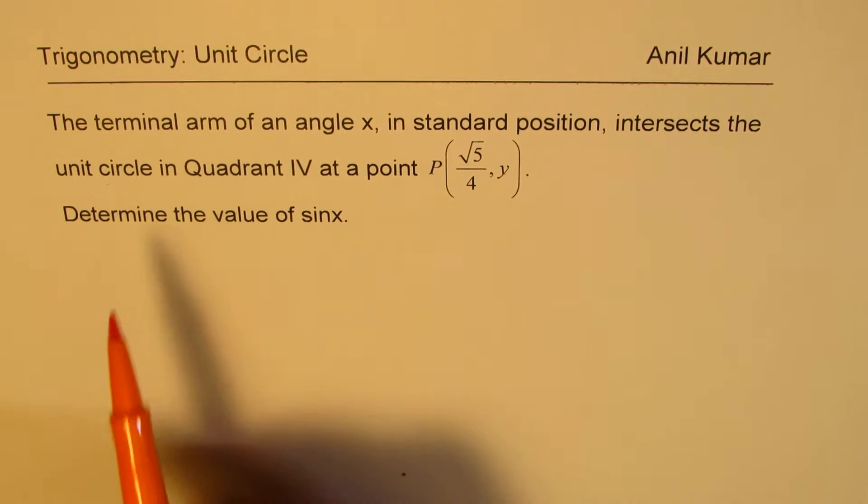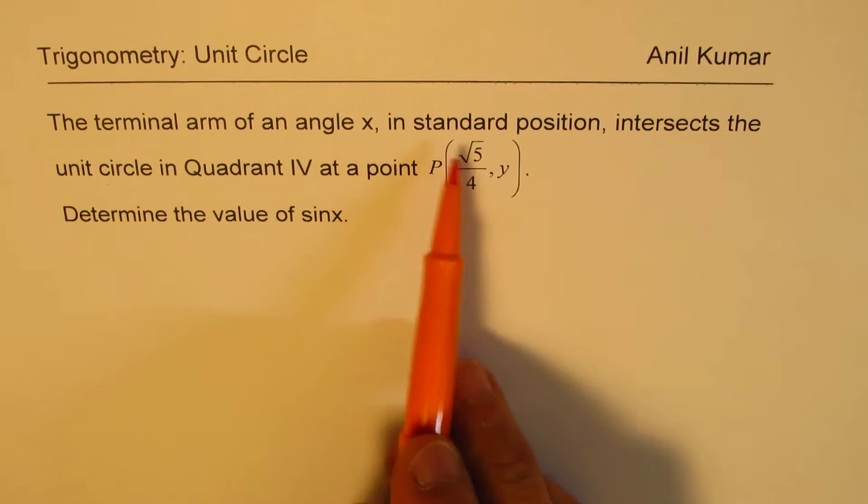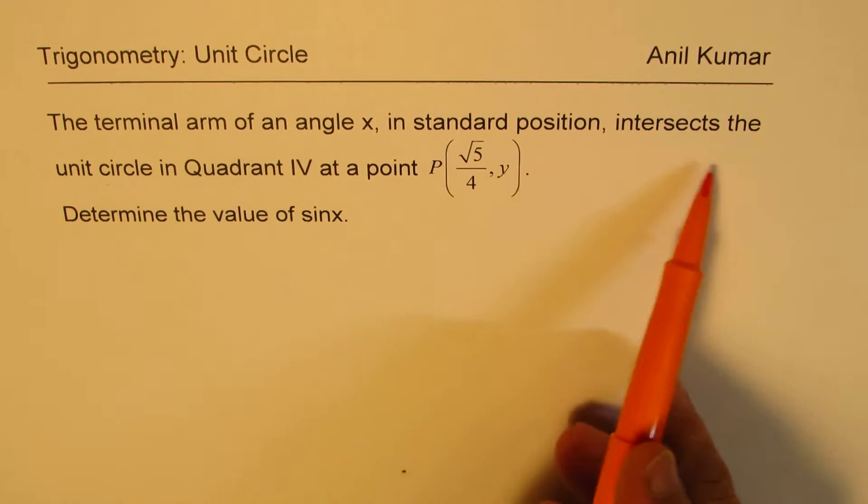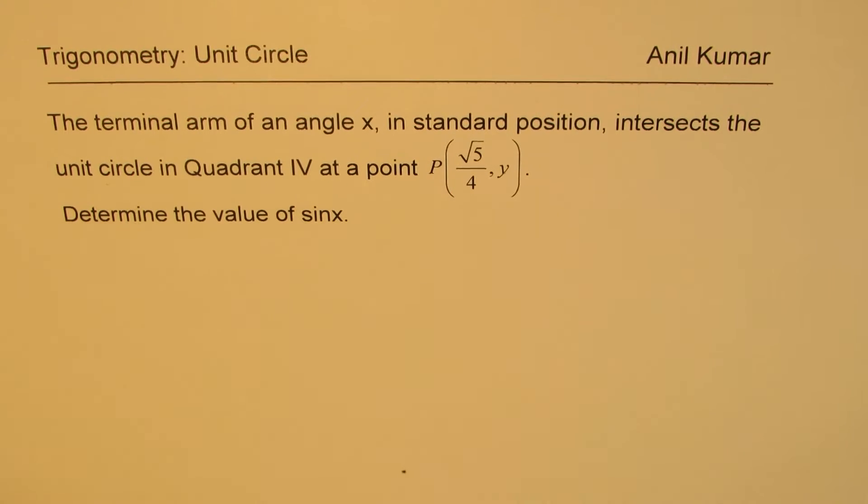The question here is the terminal arm of an angle X in standard position intersects the unit circle in quadrant 4 at a point P square root 5 over 4, Y. Determine the value of sine of X.